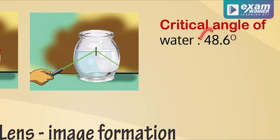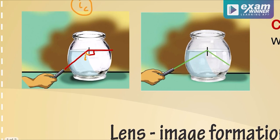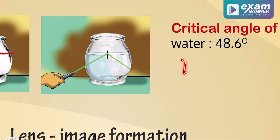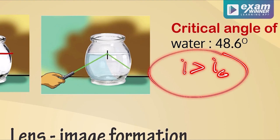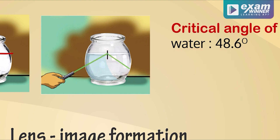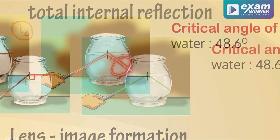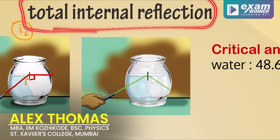If we increase the incident angle beyond the critical angle, total internal reflection occurs. When the incident angle exceeds the critical angle, all light is totally reflected back into the same medium. That is how total internal reflection works.